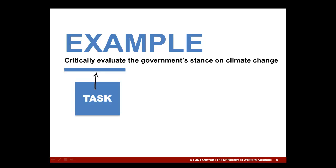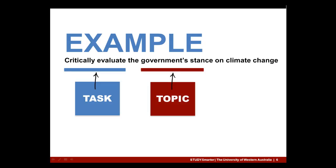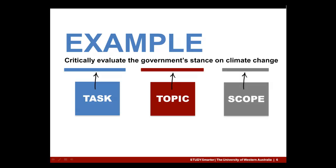The second component of the question is topic words, which indicate what you're supposed to write about. Here the topic is the government's stance. Understanding the topic helps you focus your research. The final component is the scope. Scope words limit or restrict your focus even further — here your focus should only be on the government's position on climate change, not its position on other topics. Breaking down questions this way focuses your research effort on only what's relevant to the question at hand.